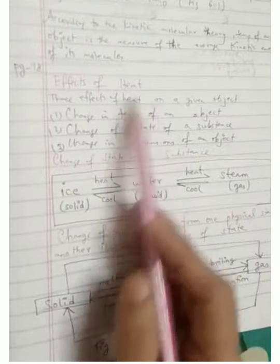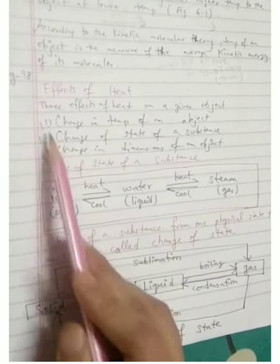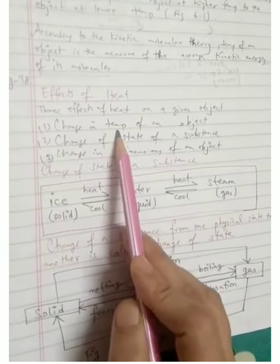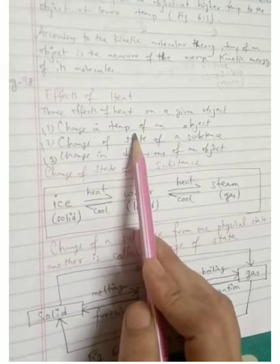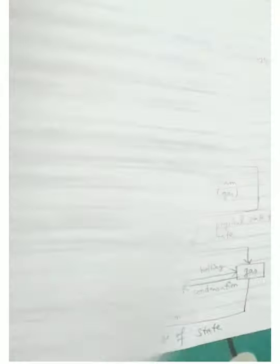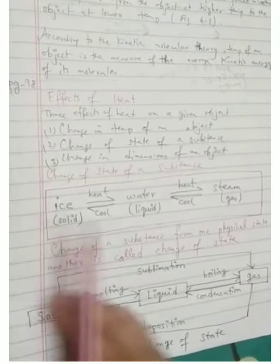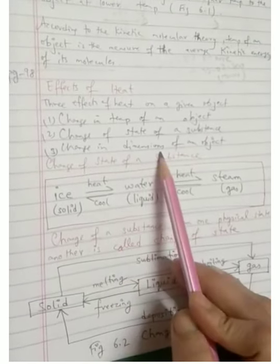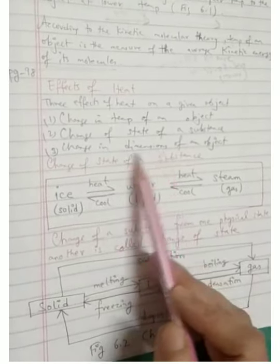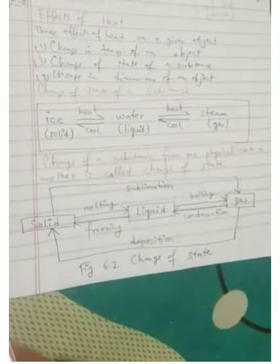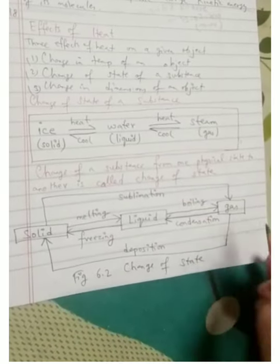There are three effects of heat: change in temperature, change of state of a substance — from solid to liquid, or liquid to gas — and change in the dimension of an object. You can refer to figure 6.2 for the diagram of change of state; please copy figure 6.2 in your copy.